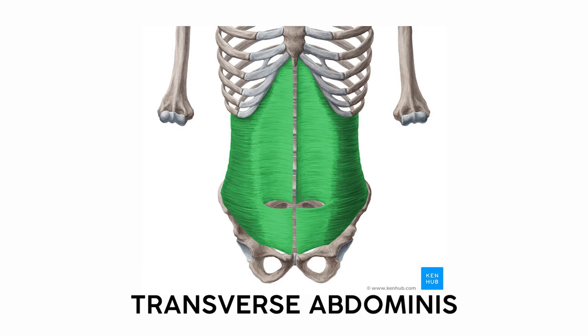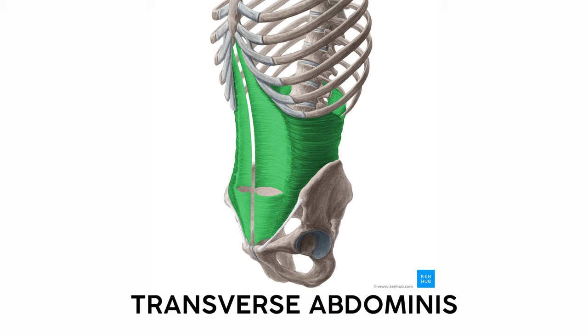The final muscle in the abdomen is the transverse abdominis. It's called the transverse abdominis because it wraps around the entire abdomen — literally starting on one side of your vertebrae, wrapping all around your abdomen, attaching to the ribs and pelvis and the other side of your vertebrae. This muscle is a big, wide muscle that transverses your entire abdomen.